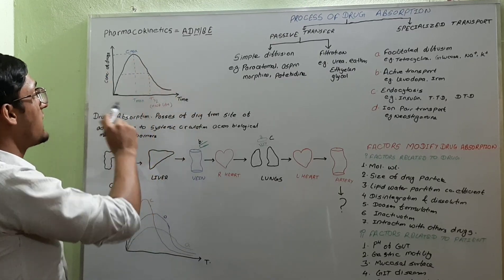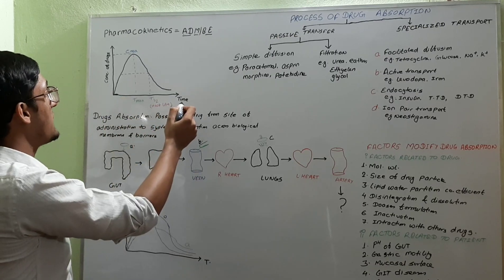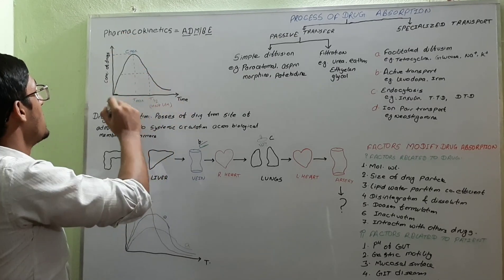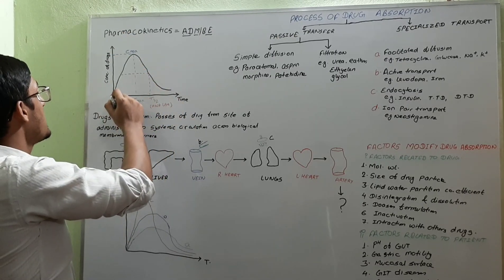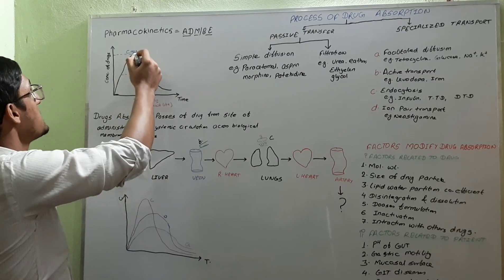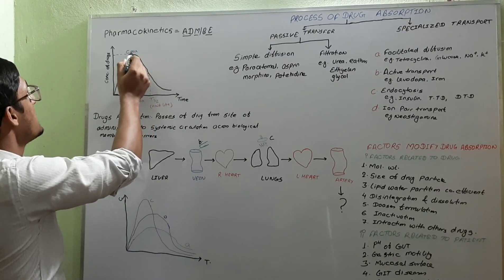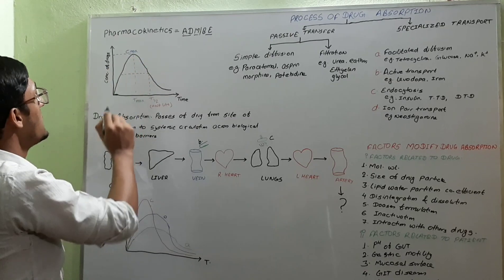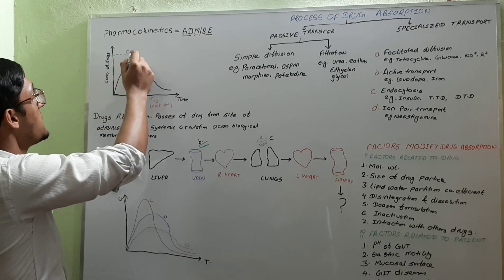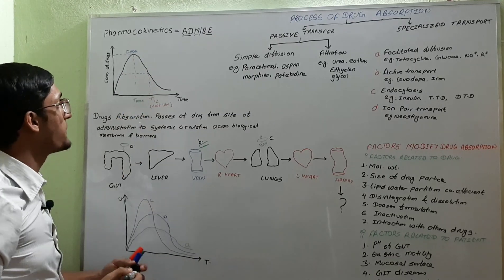Let us see the graph. On the x-axis, this is time, and on the y-axis, this is concentration of the drug. After a certain time, the concentration of the drug becomes maximum in the plasma — this is known as C max. The time required to reach maximum concentration in the plasma is known as T max.